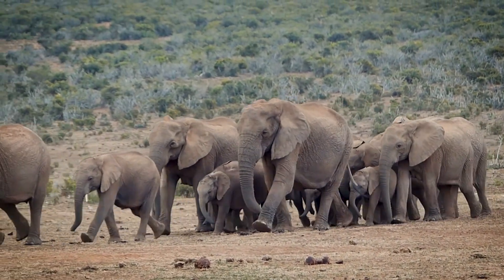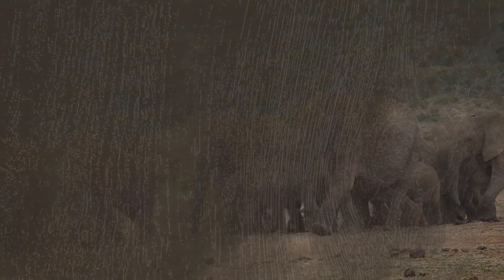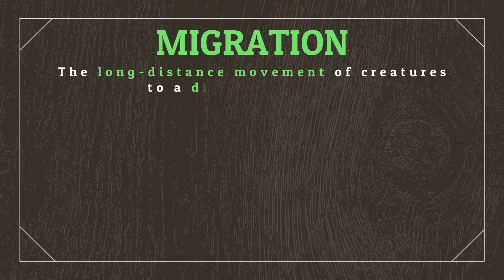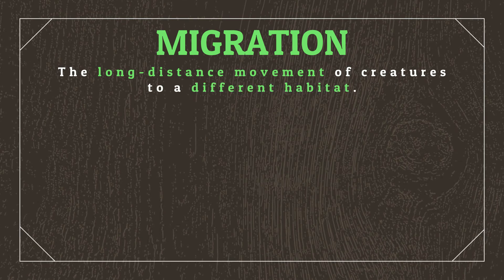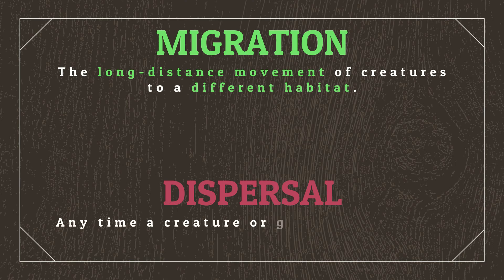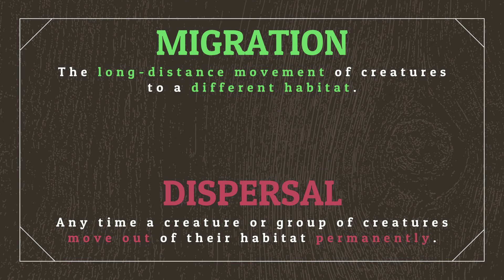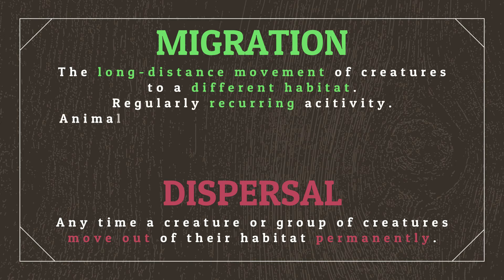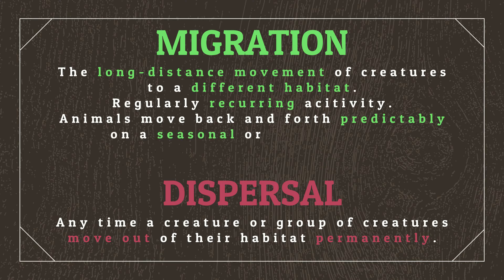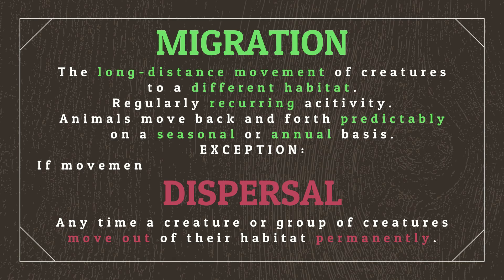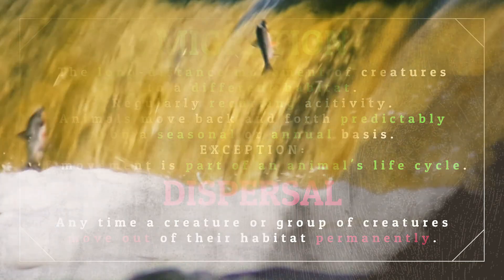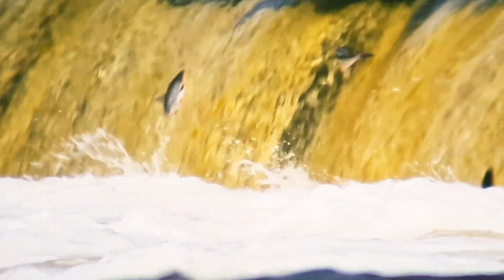Another common adaptation in savannas is migration, which occurs due to the wildly varying conditions between the wet and dry seasons. Animal migration refers to the long-distance movement of creatures to a different habitat. Migration is contrasted with dispersal, which refers to any time a creature or group of creatures move out of their habitat permanently. For the movement of creatures to be considered migration, it must be a regularly recurring activity, with animals moving back and forth predictably on a seasonal or annual basis — or as part of an animal's life cycle, such as Atlantic salmon leaving the river they were born in once they reach a certain size.